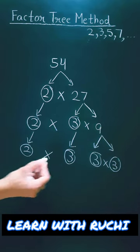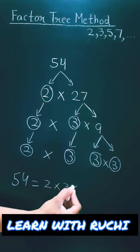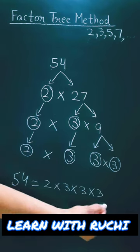Here is our 2. So in this way, 54 equals 2 into 3 into 3 into 3. Thank you.